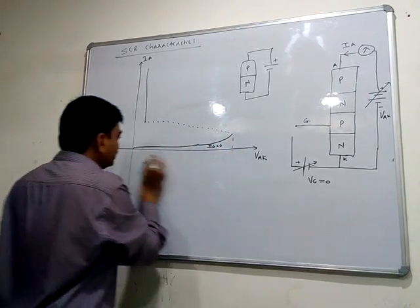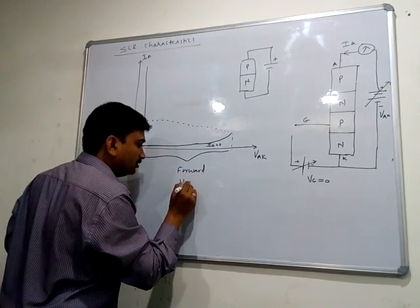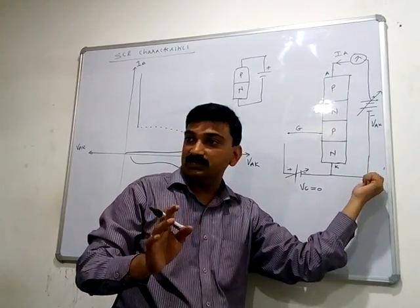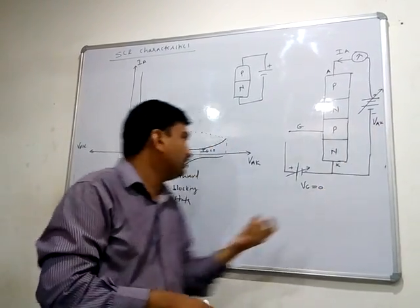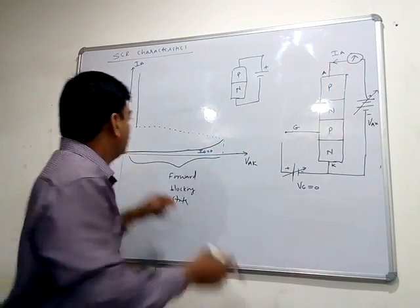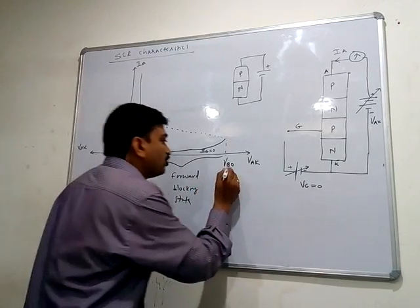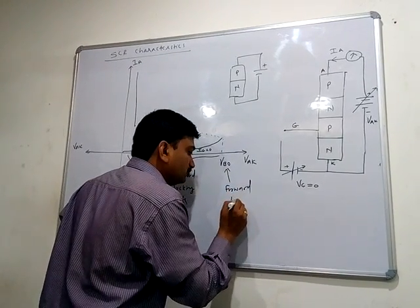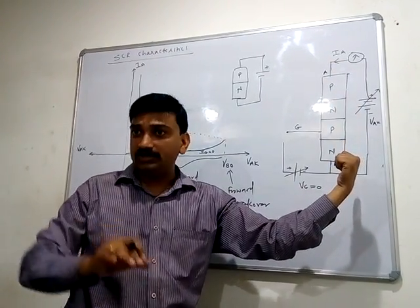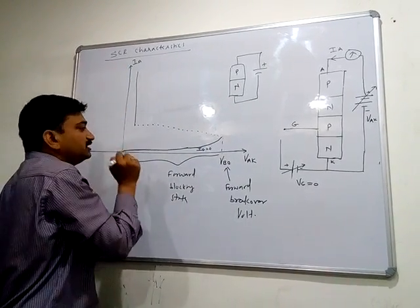The forward blocking state means the device is in forward bias but there is no conduction — it is blocked by the device. You get a very small amount of anode current. At a certain point, known as VBO — the forward breakover voltage — the SCR turns on immediately. It suddenly starts conducting and the anode current increases rapidly, just like a transistor switching on.